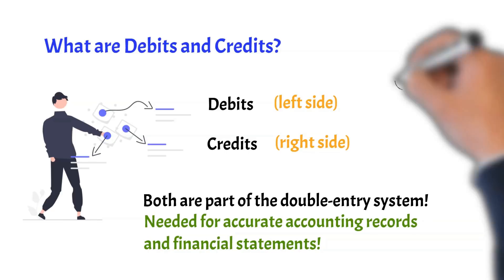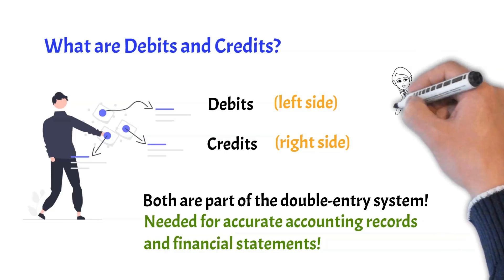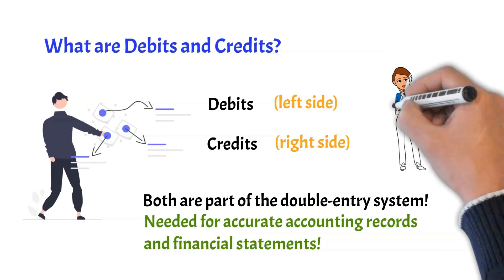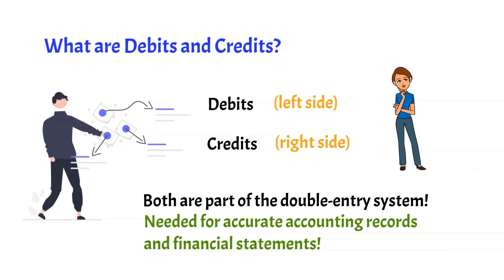The first task is deciding which accounts will have debit entries and which will have credit entries. Before I show debits and credits in the accounting and bookkeeping process, let's talk about the accounts where the debits and credits will be entered.